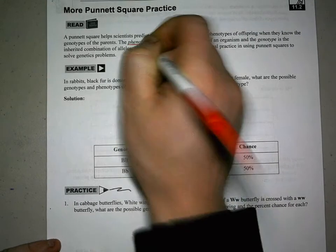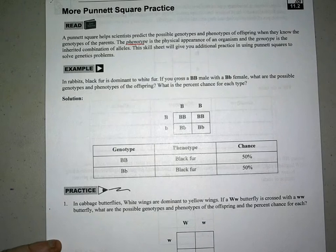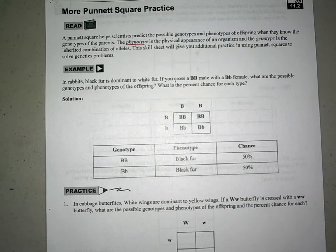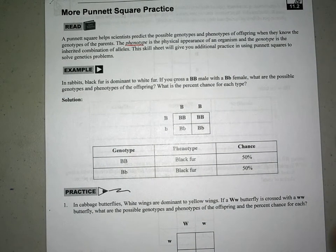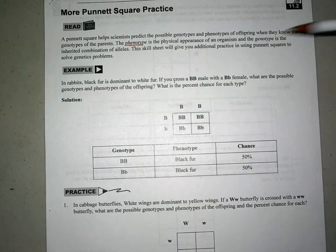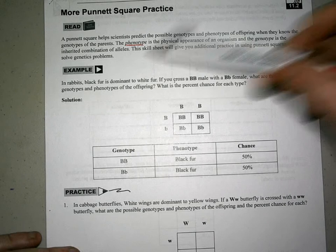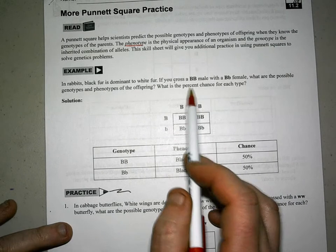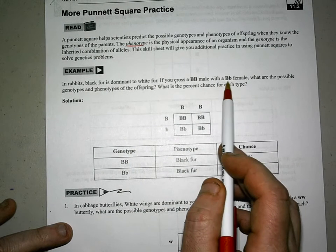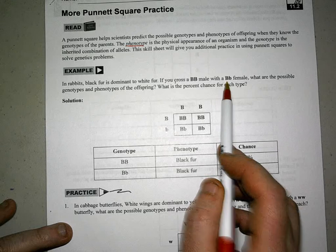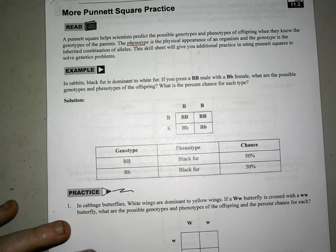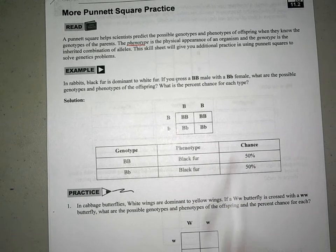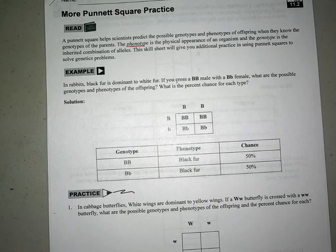The phenotype is the physical appearance of an organism — it's basically the way the organism looks. That's the phenotype. The genotype is like the genes; it is the inherited combination of alleles. So Big B, Big B or Big B, Little B — that's going to be your genotype. We'll talk about those in just a little bit, but genotype and phenotype are the two key terms.